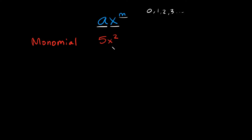This is also called a polynomial, but more specifically it's called a monomial. The way you can remember what monomial means is by taking the root word 'mono,' which means single. Another example of a monomial would be something like negative 3n to the seventh power — this is also just a single term, so it's also called a monomial.